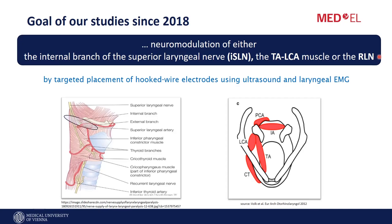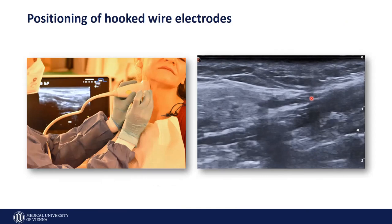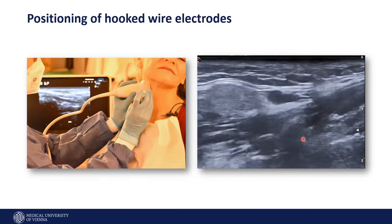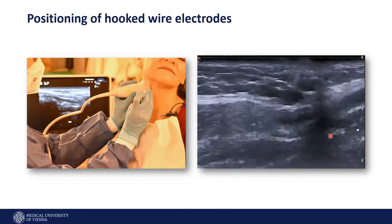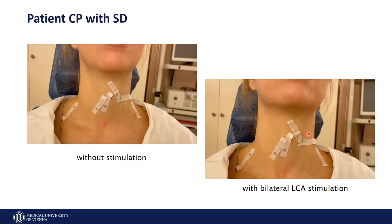We try to find the internal branch of the SLN by ultrasound, the same with the LCA, and then we try to find the RLN. With needle positioning, you see the shadow of the tracheal column, and with the thyroid membrane a little bit above, you can find the tiny branches of the ISLM. We use hooked wire electrodes for direct stimulation — ISLM, LCA, and RLN.